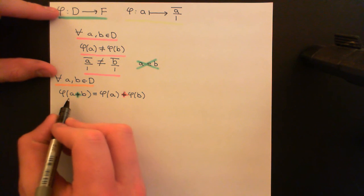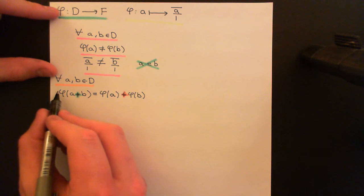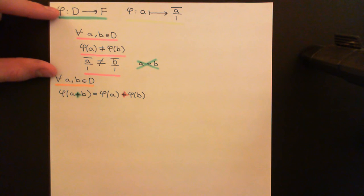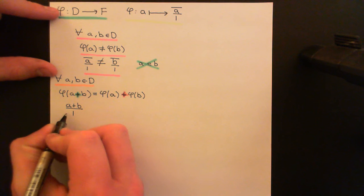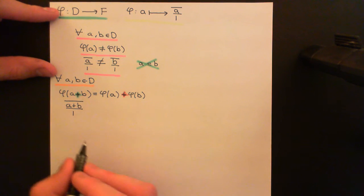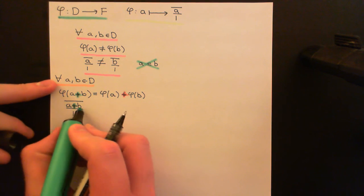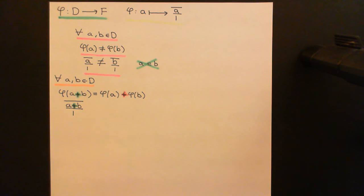Let's consider the left-hand side: we have A added to B in the integral domain, and we take φ of that. Just applying the definition, it will be mapped onto the equivalence class of fractions that contains the fraction (A + B) over 1, where this is still addition in the integral domain. So add A and B together in the integral domain, put that over 1, and take the equivalence class containing that fraction — that's φ(A + B).